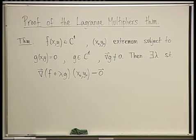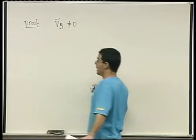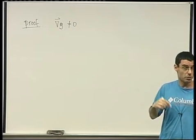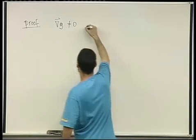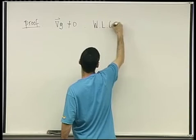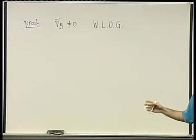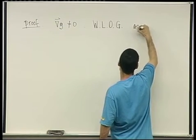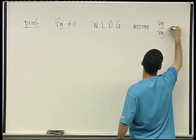By assumption, the gradient of g is not zero. That means either the partial derivative of g with respect to x is not zero, or the partial derivative of g with respect to y is not zero — they can't both be zero. So without loss of generality, assume that the partial derivative of g with respect to y is not zero.